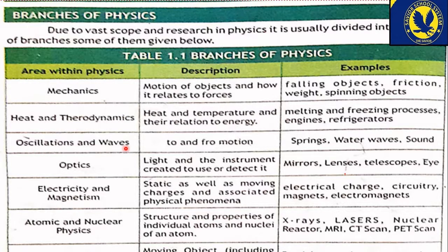تیسری branch ہے oscillations and waves۔ Oscillation ہوتا ہے movement around a mean position — ایک mean position کے آگے پیچھے movement کو oscillation کہتے ہیں، to and fro motion۔ مثال کے طور پر گھڑی کے نیچے لٹکتا ہوا pendulum۔ Springs کس طرح کام کرتے ہیں، water waves اور sound — ان سب چیزوں کو اس branch میں پڑھتے ہیں۔